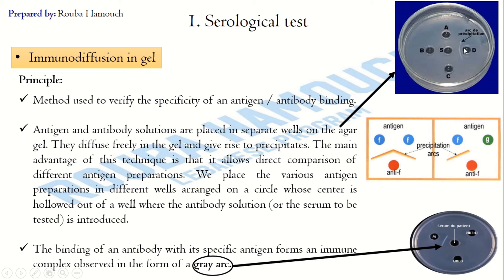The serum only contains anti-D antibodies. Similarly, the formation of a gray arc between the central serum well and antigen M indicates the test serum contains anti-M antibodies. The formation of a gray arc confirms the presence of specific antibodies to a certain antigen, confirming the diagnosis.